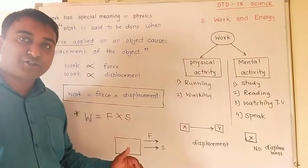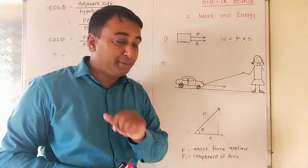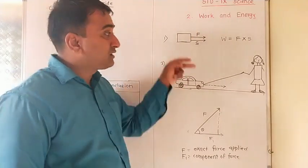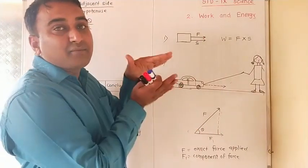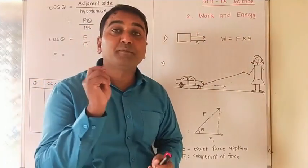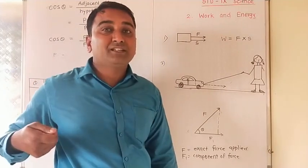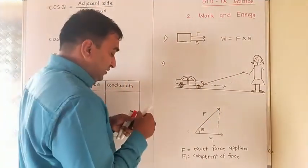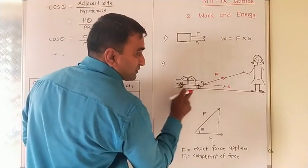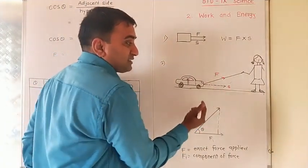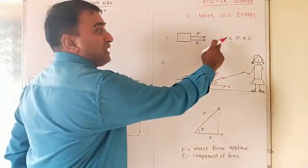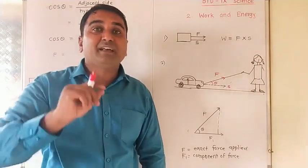But there are other cases too. Suppose a girl is pulling a toy car towards her. The force is applied in the direction the girl is pulling, but the displacement of the toy car is along the road — so there is an angle theta between the force and the displacement direction. In this case we cannot directly use W = F × S, because that formula is only valid when force and displacement are in the same direction.